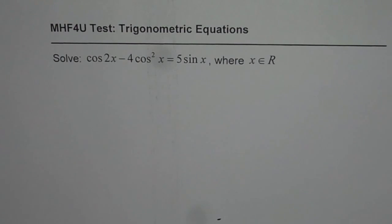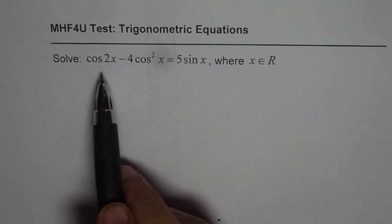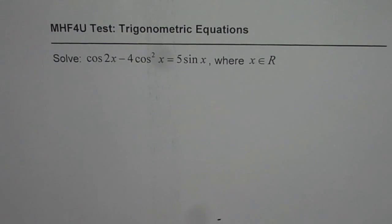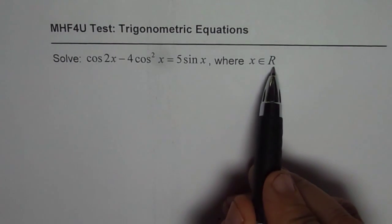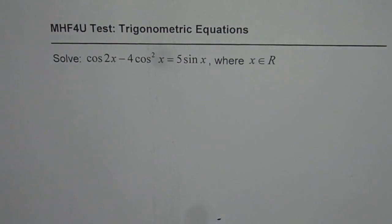I am Anil Kumar and here is a trigonometric equation from the previous test papers. The question here is: cos 2x minus 4 cos squared x equals 5 sine x,